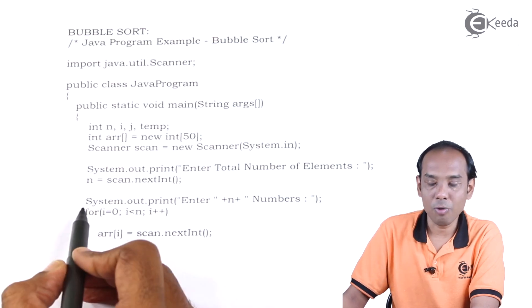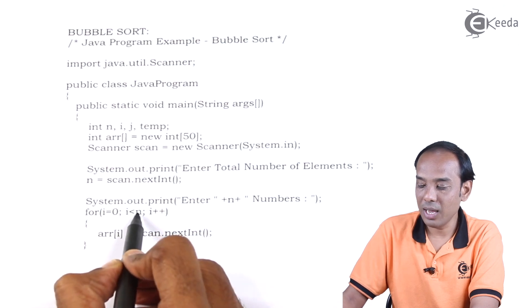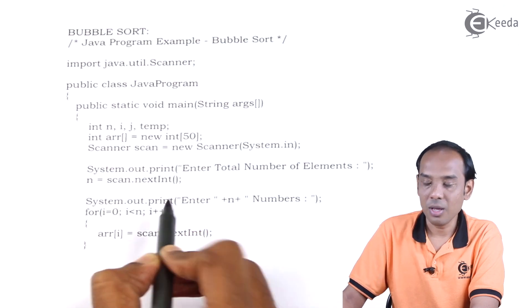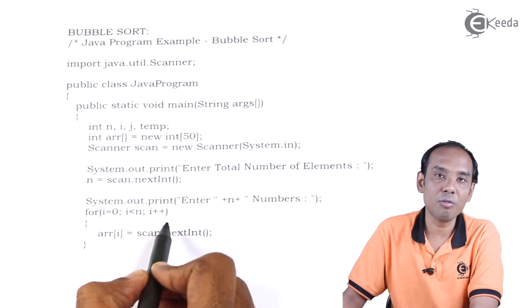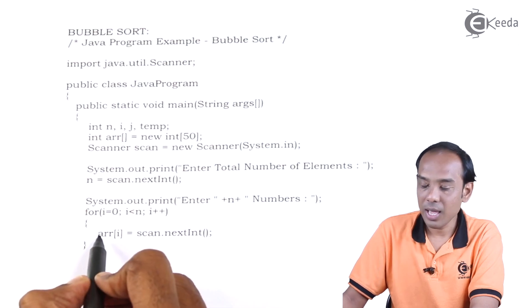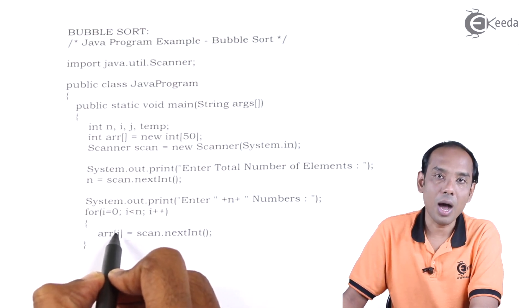Now we will iterate through this loop: for i equal to 0, i less than n, i++. We will store these values which are taken from the user in the array arr using variable i.